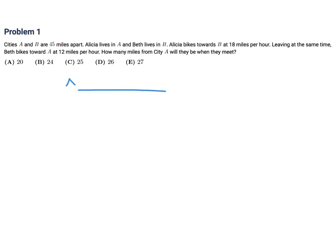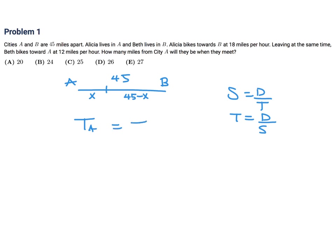So here's Alicia, here's Beth, and they're 45 miles apart. They'll meet somewhere — let's say here at that point. That distance is X and that distance would be 45 minus X. Speed is equal to distance over time, or any variation of that formula like D over S is T. They meet when the times are equal, so when the time for Alicia is the same as the time for Beth.